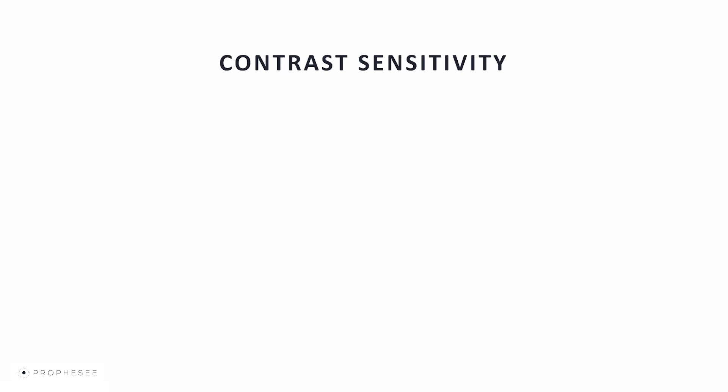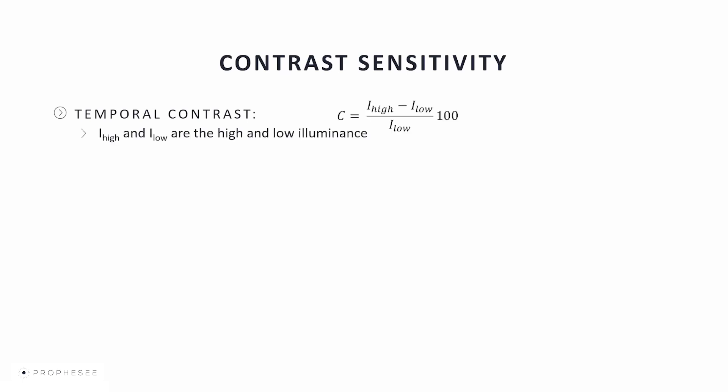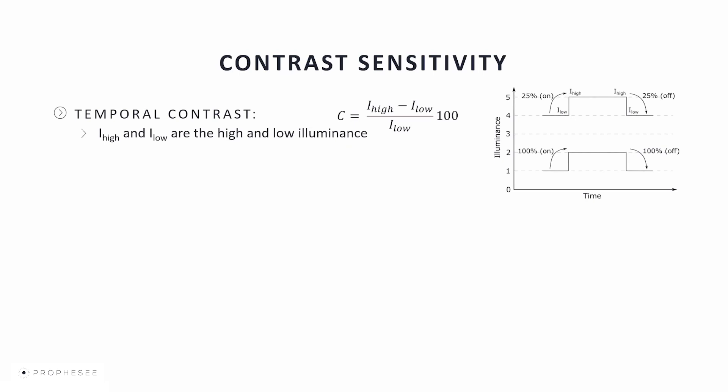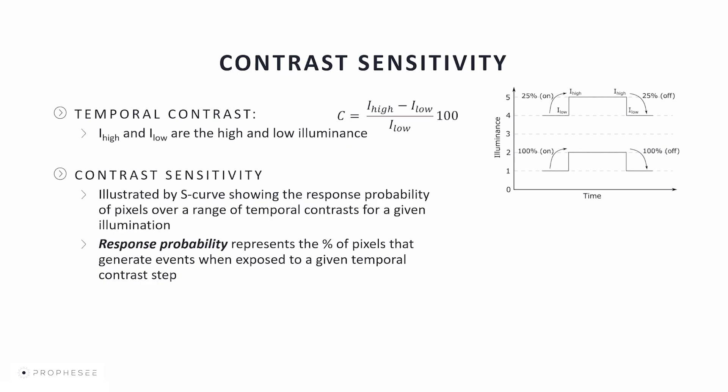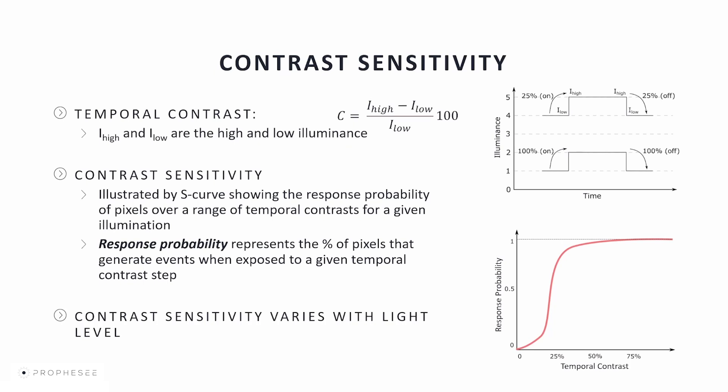Contrast sensitivity: the principal task of event sensors is detection of contrast changes. We talk about temporal contrast — a contrast change over time for a single pixel — using the Weber definition. Temporal contrast is computed as the ratio of the difference between high and low illuminance to the low illuminance, multiplied by 100%. The sensor's contrast sensitivity is illustrated using an S-curve showing the response probability of pixels over a range of temporal contrasts. Response probability represents the percentage of pixels generating events when exposed to a given temporal contrast step. The S-curve shifts left or right depending on light level.